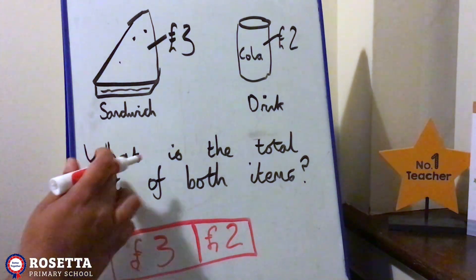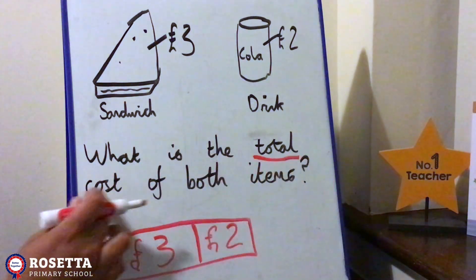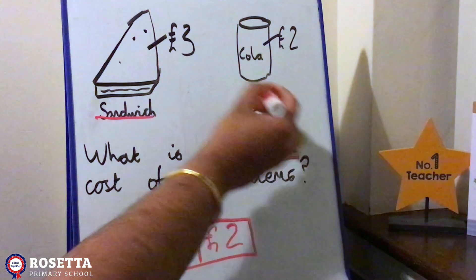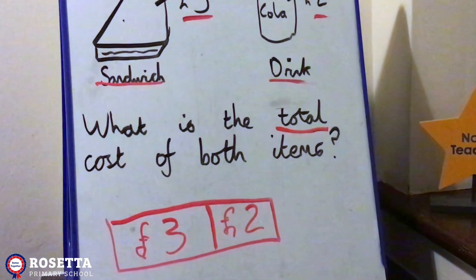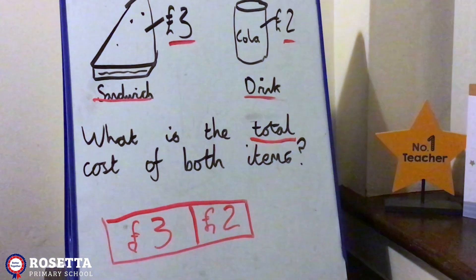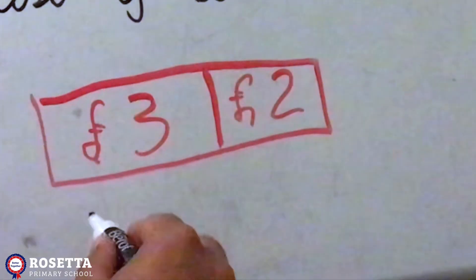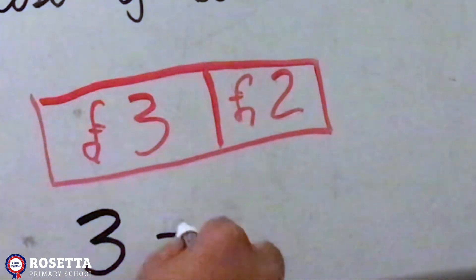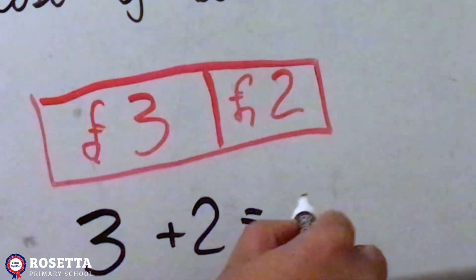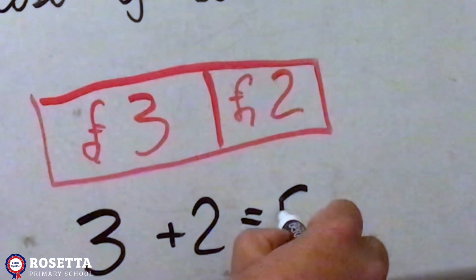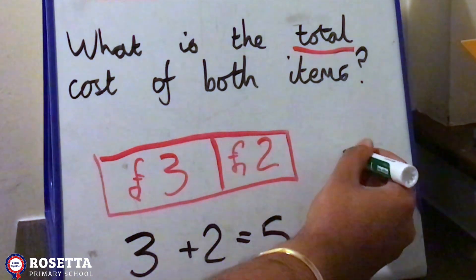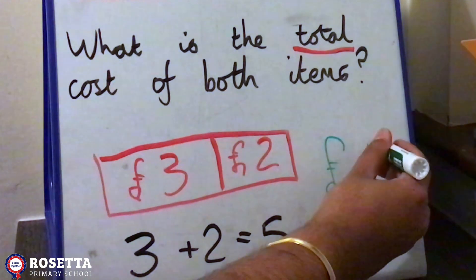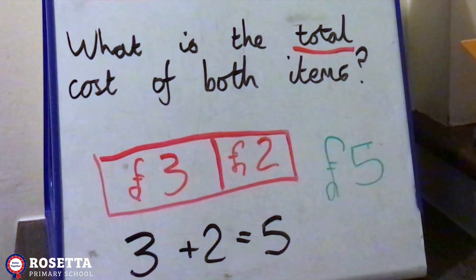The calculation is asking me to take away or add? What is the total cost of both items — what word tells me if I need to add or subtract? Well done, that means we have to add them together. Three plus two equals five. How much did I spend on the food? Well done, it is five pounds!